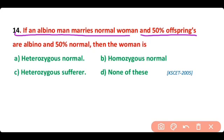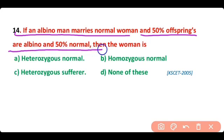Question number 14. If an albino man marries a normal woman and 50% of offspring are albino and 50% are normal, then the woman is — so correct answer is option A. The woman must be heterozygous normal.